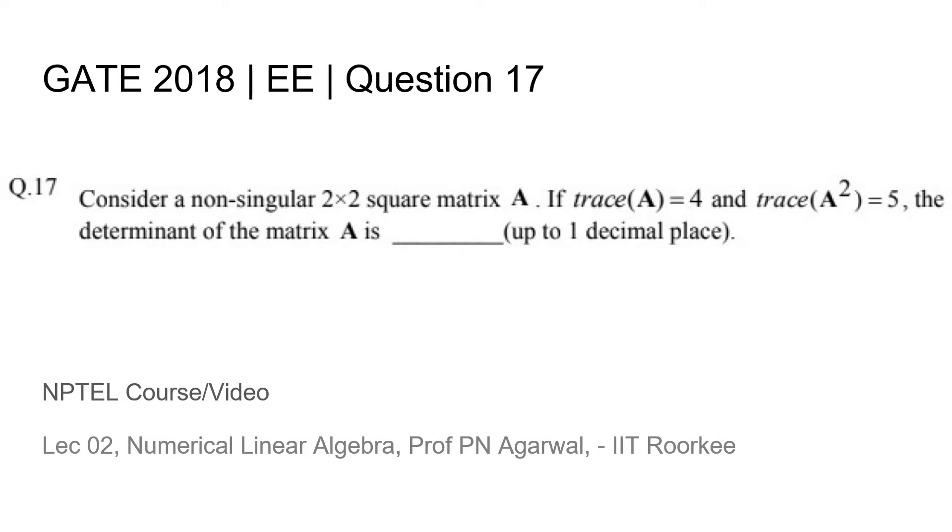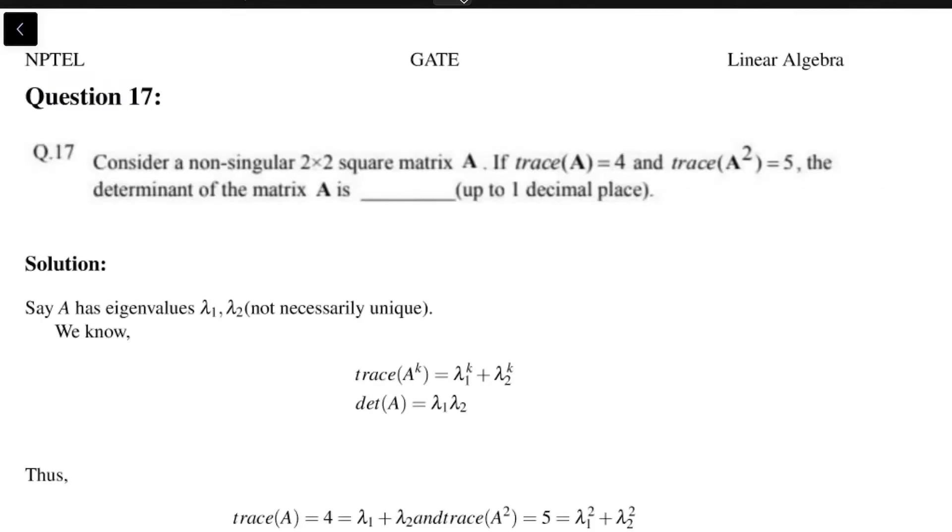So the idea is that trace of A^k equals λ₁^k plus λ₂^k, for λ₁ and λ₂ the eigenvalues of A. And determinant of A is the product of the eigenvalues.